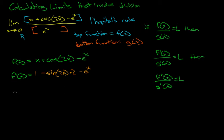What about the bottom function? g(x) equals x squared, so therefore g prime of x equals 2x.